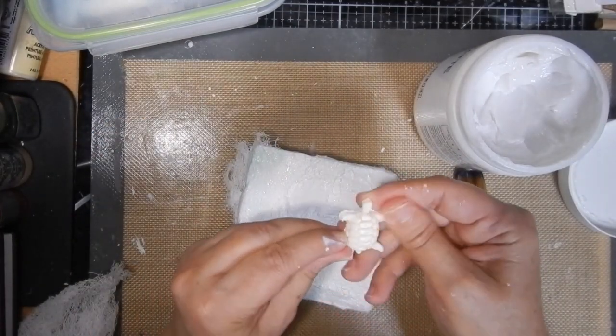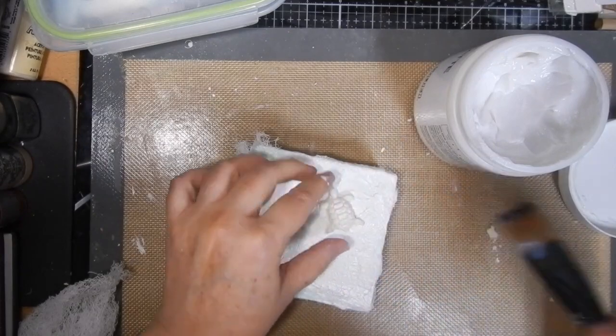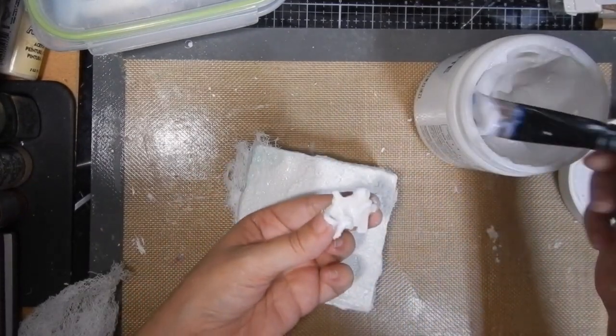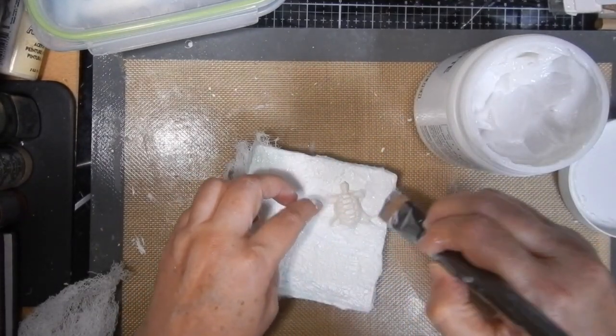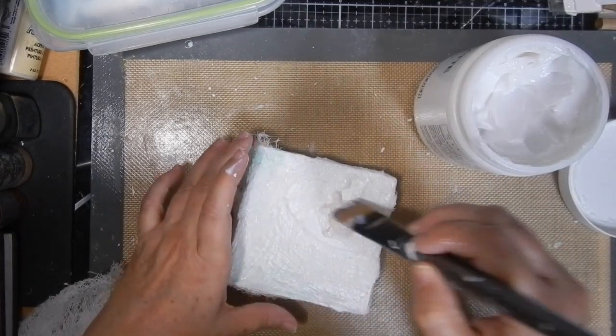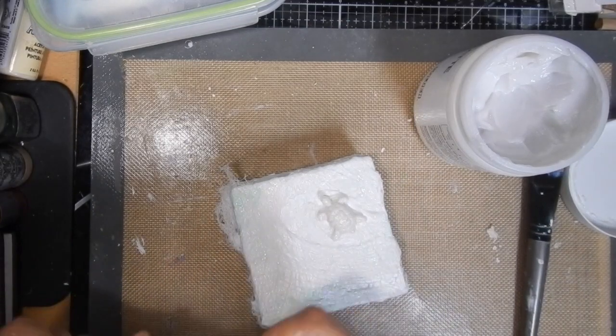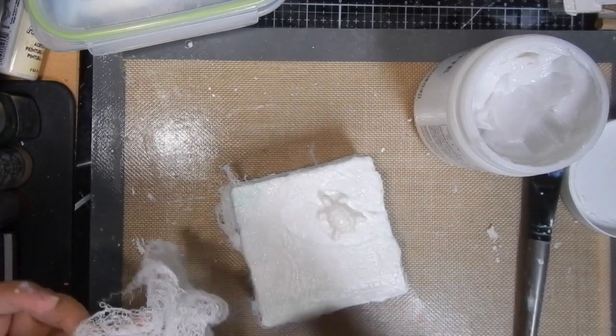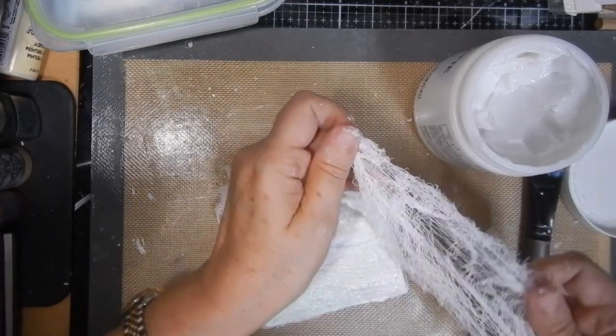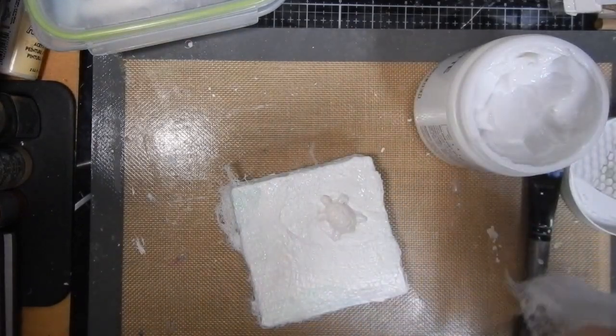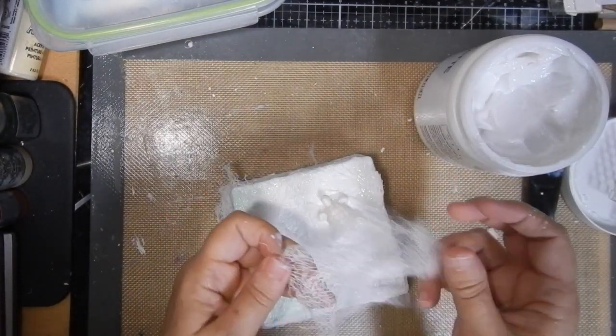Now I'm going to add my turtle. I'm using some gel medium to stick that down also, and I'm going to put some gauze over the turtle as well. I made my turtle with a silicone mold and some soap clay that I was experimenting with—a recipe I got off of YouTube.